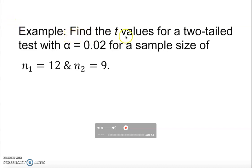Okay, this video I'm going to show you how to find the critical value for a two-tailed test with a given significance level, alpha level, and two independent samples: n1 is 12 and n2 is 9.